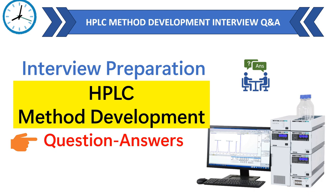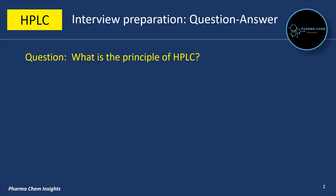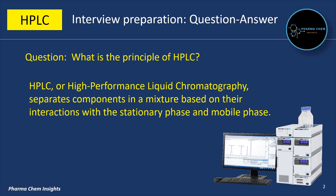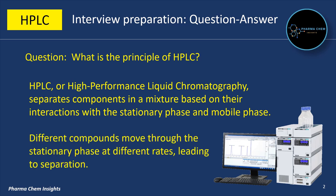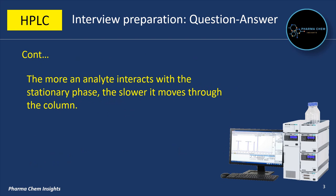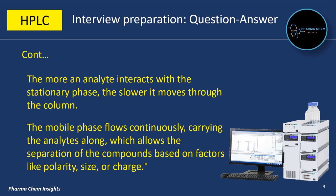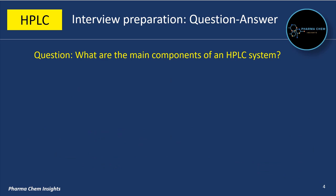Let's get started. First question: what is the principle of HPLC? HPLC, or High Performance Liquid Chromatography, separates components in a mixture based on their interaction with the stationary phase and mobile phase. Different compounds move through the stationary phase at different rates, leading to separation. The more an analyte interacts with the stationary phase, the slower it moves through the column. The mobile phase flows continuously, carrying the analytes along, allowing separation based on factors like polarity, size, or charge.